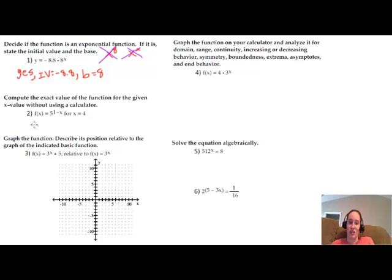Number two says to do it without using a calculator, so again, that's a really strong possibility that this could end up on a no-calculator part of the test. We just want to put 4 where the x is. So 5 to the 1 minus 4. Well, 1 minus 4 is negative 3. 5 to negative 3, to get that to be a positive exponent, we move what we have down to the bottom. So that's 1 over 5 to the positive 3, and then 5 to the third power is 125, which gives us this right here as an answer.